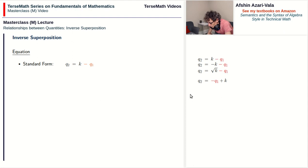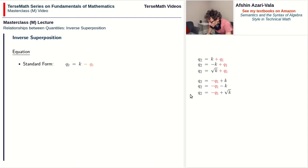Again, it makes no difference what happens to k. You may subtract k if you want, you may add root k if you want. So long as q1 is being subtracted, you have an inverse superposition relationship.